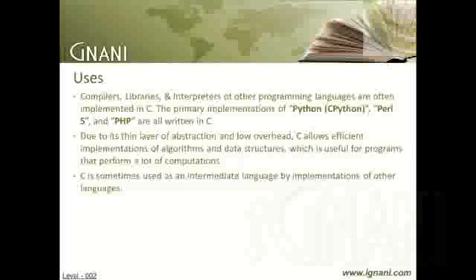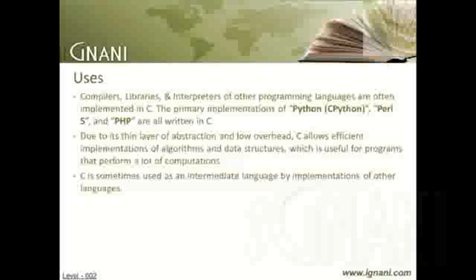Some languages and compilers which have used C this way are BitC, C++, COBOL, Eiffel, Gambit, GHC, Squeak, and Voila. However, C was designed as a programming language, not as a compiler target language, and is thus less than ideal for use as an intermediate language. This has led to the development of C-based intermediate languages such as C-minus-minus.